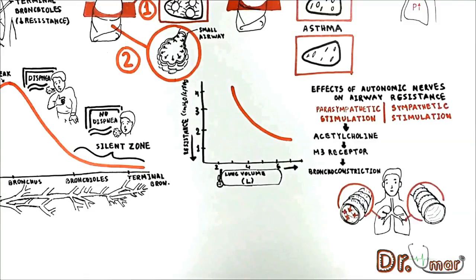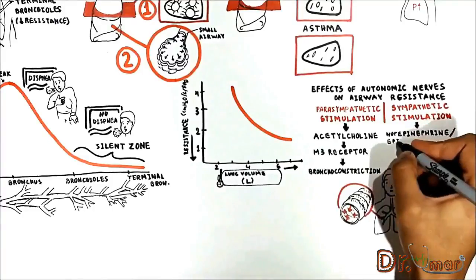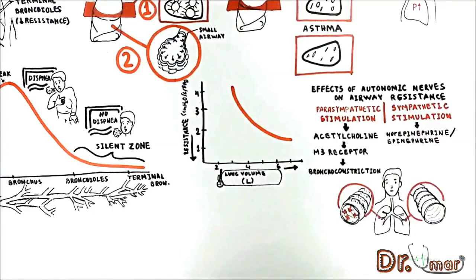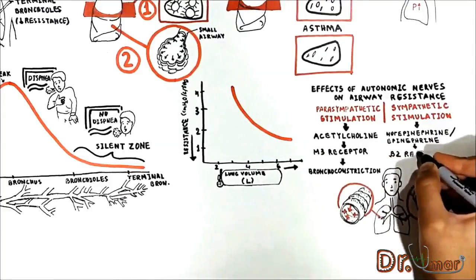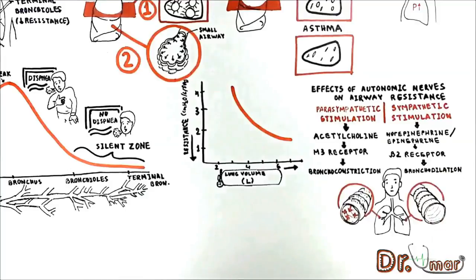However, the bronchial tree is very much exposed to norepinephrine and epinephrine released into the blood by sympathetic stimulation of the adrenal gland medulla. Both these hormones, especially epinephrine, stimulate the beta receptors causing bronchodilation.